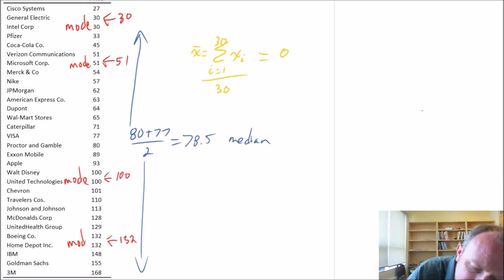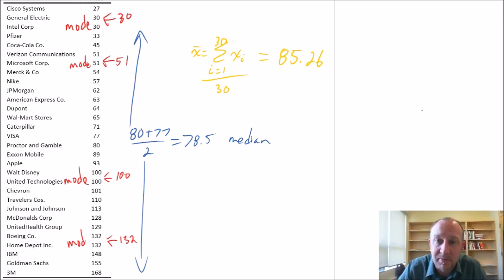So 85.26 is my mean. This is my average share price of these 30 different companies taken from the Dow Jones Industrial Average. So there we have our mean, our median, and our four modes for the sample of 30 shares from the Dow Jones Industrial Average.